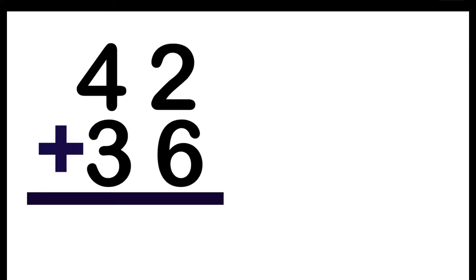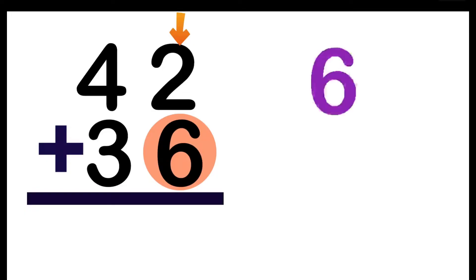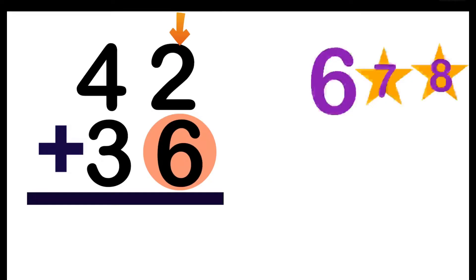How about if we have 42 plus 36? In adding numbers, we are going to start from right to left. So, we're going to start from the 1's place. 2 plus 6 — look at the big number, which is digit 6. So, 6 on your mind, then add 2 more: 6, 7, 8. So, 2 plus 6 is equal to 8.